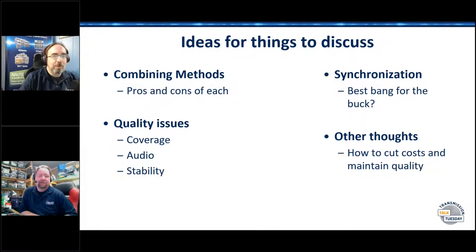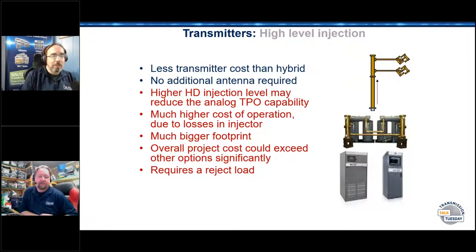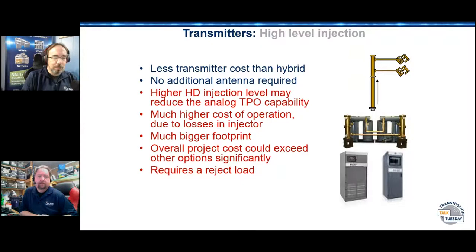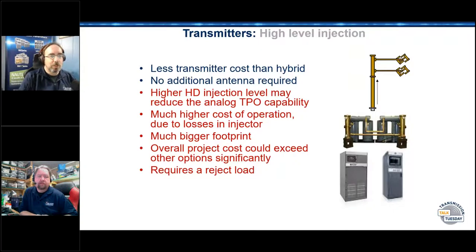One of the big questions I get — and I'm dealing with it now with a customer — is a lot of folks don't know the different ways you can generate the HD signal. High level injection was one of the first things, and a lot of early adopters did this: a big transmitter doing analog, a little transmitter doing HD, a 10 dB combiner, and you dump a whole lot of power into a reject load while a whole lot goes up the antenna. Downside: you're dumping 10% of your analog power and 90% of your digital power into the reject load.